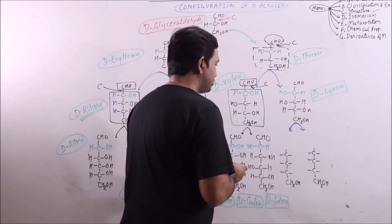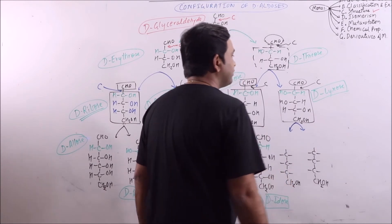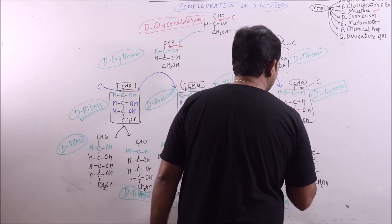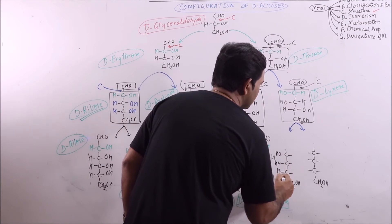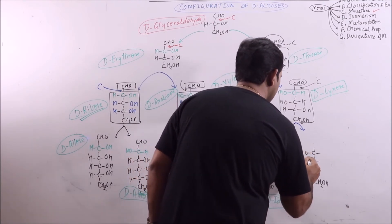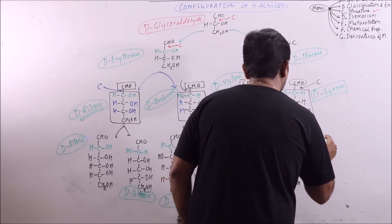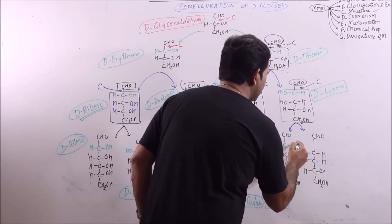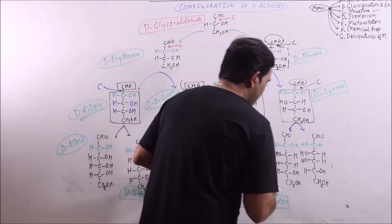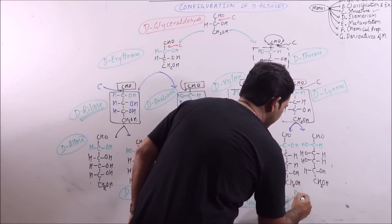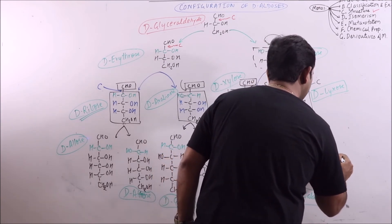For D-Lixose undergoing Kiliani-Fischer Synthesis, again this region will be kept intact and the carbon is added between these two carbons. The new carbon will be added in this region. What we are obtaining by this step is D-Galactose and D-Talose.